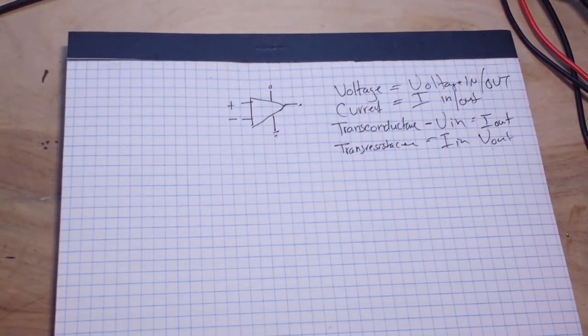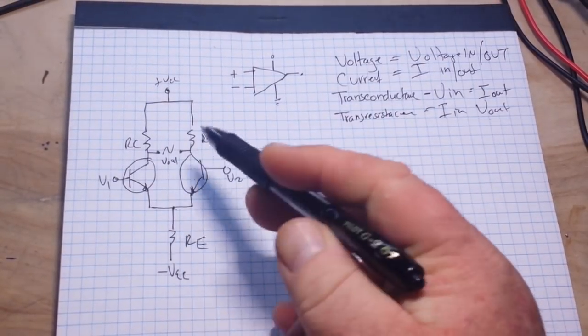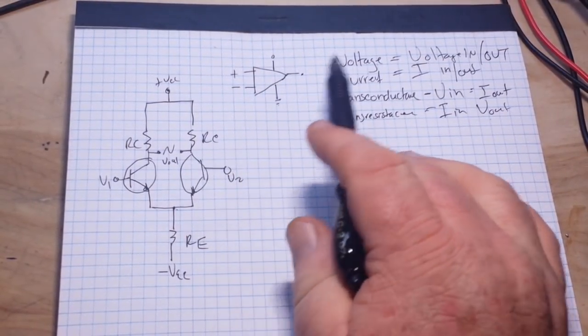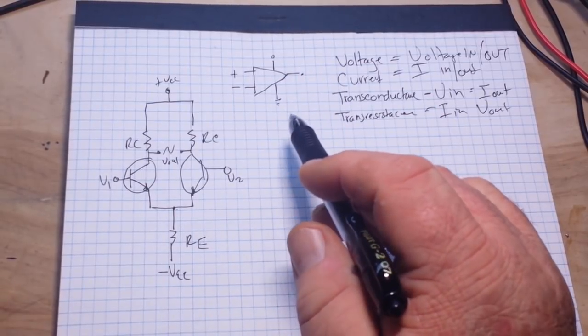So this type of an amplifier that we're talking about is actually what's known as a differential amplifier. Let me draw it first and we'll come back and talk about it.